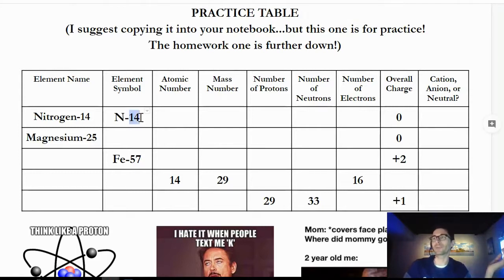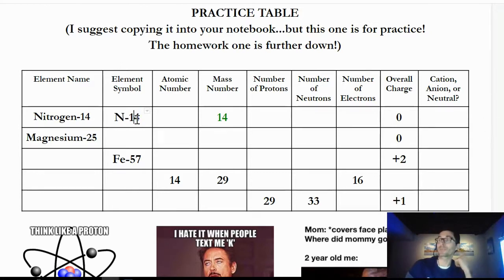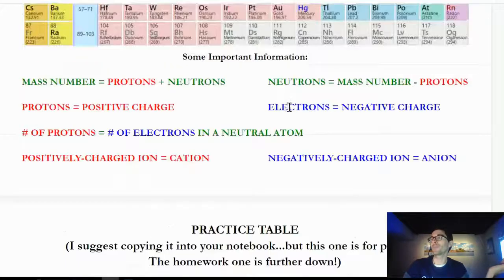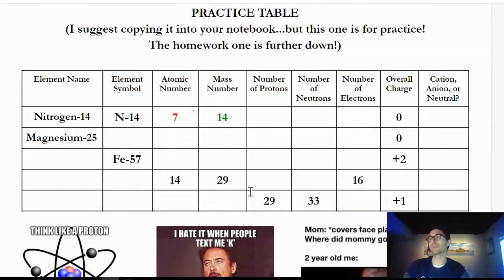The second number in the atom name is your mass number, so for Nitrogen-14 we type in 14 as the mass number — you can see it in the symbol N-14. That number signifies how many protons and neutrons you have. The element is nitrogen, so I look on the periodic table for nitrogen. There it is — nitrogen has atomic number 7. I put 7 in the protons box, since atomic number equals number of protons.